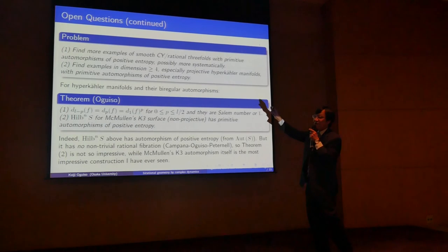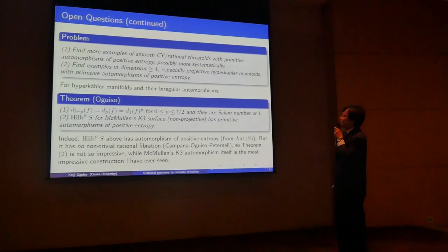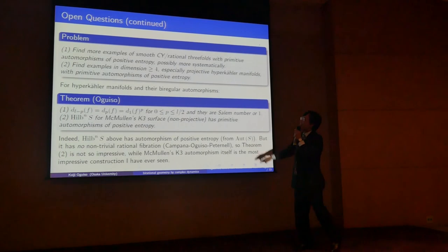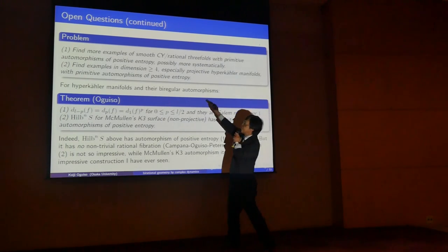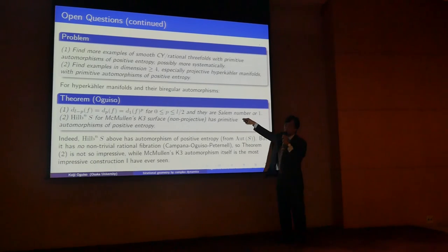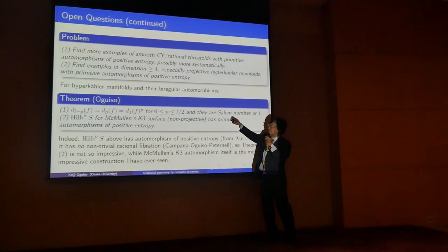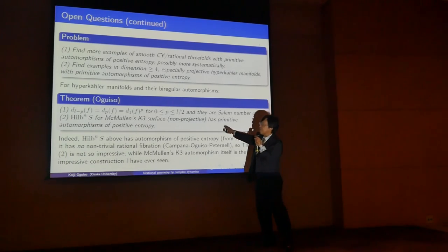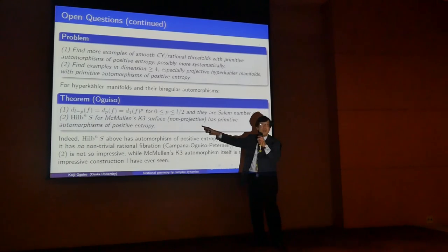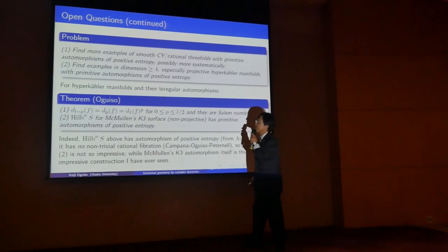The second problem is that our example is quite isolated, so more examples would be better. I think in our current case there may be more ways to see this, but the computation of entropy is harder. For me the most interesting question is whether there are hyperkähler examples. In that case, we can compute all information of dynamical degrees. I'm sorry, I did not yet find a complete example. But if we drop the projectivity assumption, then the Hilbert scheme of n points of a McMullen K3 surface is such an example — a hyperkähler manifold equipped with primitive automorphisms of positive entropy. Positivity comes from the construction, but primitivity is very difficult to establish. We can show there are no non-trivial meromorphic fibrations from the Hilbert scheme.